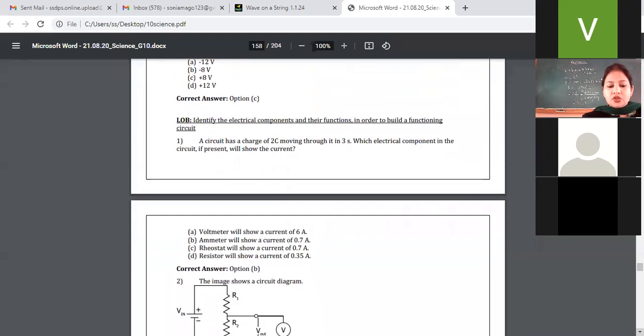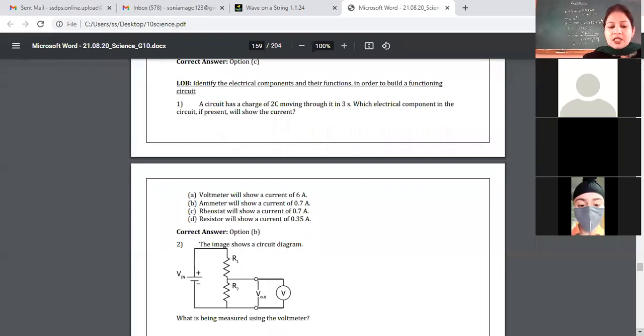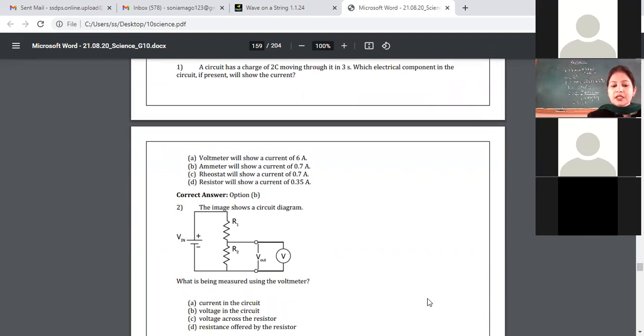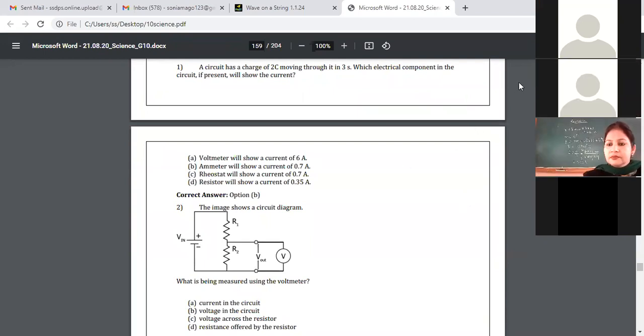The image shows a circuit diagram. What is being measured using the voltmeter here? Voltmeter kya measure kar raha hai? Options are: current in the circuit, voltage in the circuit, voltage across the resistor, resistance offered by the resistor. Yes, Chahat? Ma'am voltage in the circuit. No. This is voltage across the resistor only. See, this voltmeter is connected across these points. Only this resistor's voltage is measured.